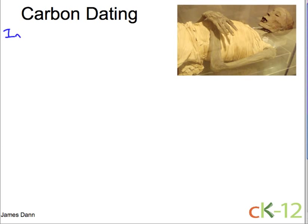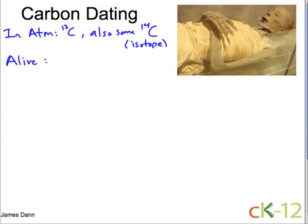In the atmosphere, obviously there's a lot of carbon. Carbon gets the symbol C, and 12 is the stable form. There's also some carbon-14, and that's an isotope. It's not stable — it decays. As long as you're alive, the ratio of C14 to C12 stays constant.